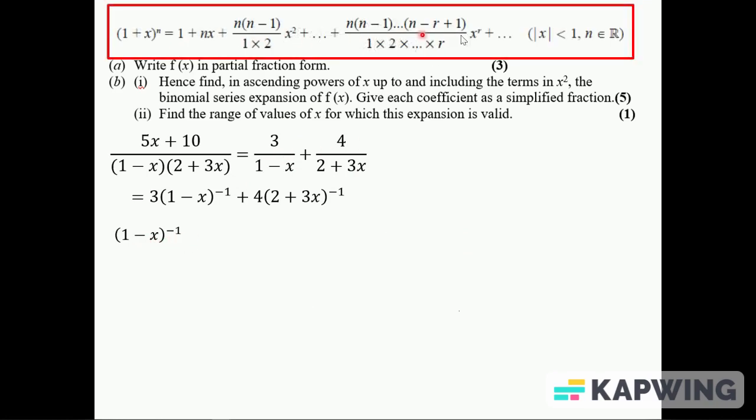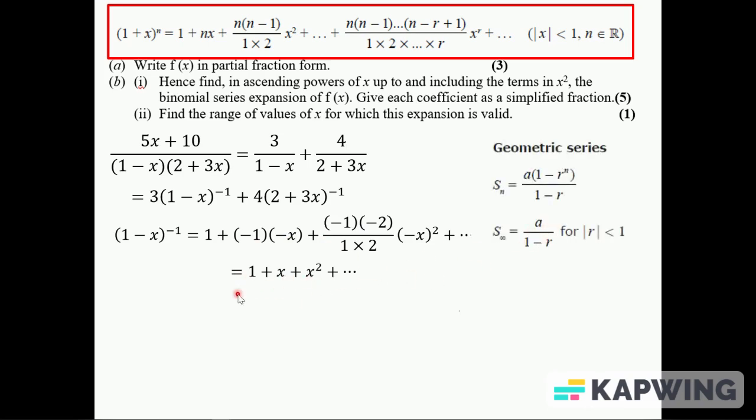Here's what it says in the formula book: 1, n times (n-1) over 1×2 times x squared, the next term would be n(n-1)(n-2) over 1×2×3 or 3 factorial multiplied by x cubed. So this one: n times x, (n-1) times 1×2.